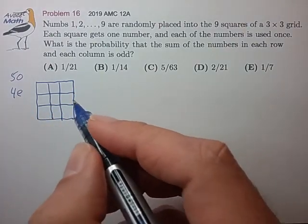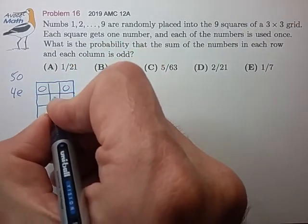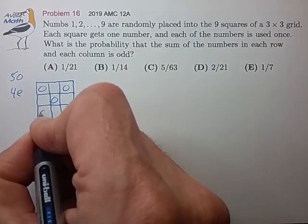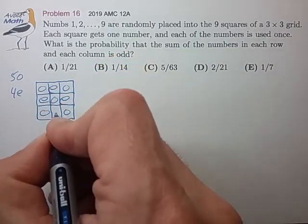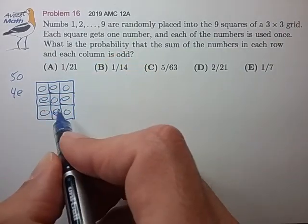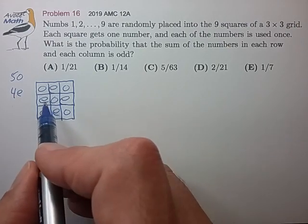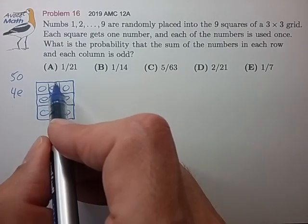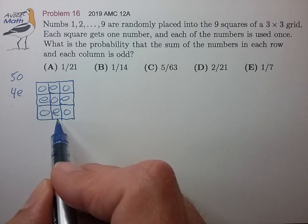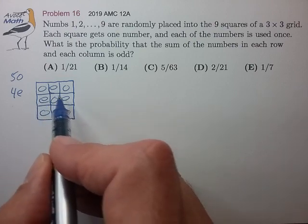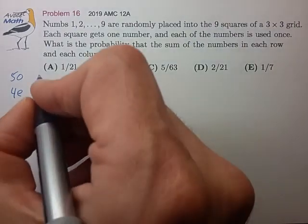Let me just try to put them in a checkerboard pattern just to see what happens. If I put them in a checkerboard pattern, that's a big fail. They're odd along the middle column and row, but everything else is even, so that doesn't work.